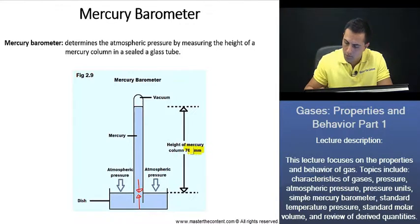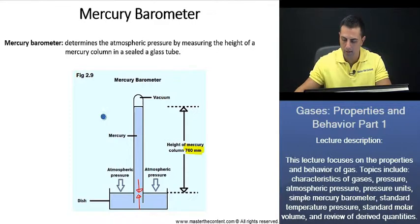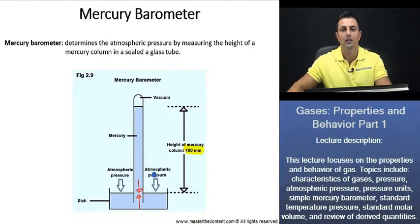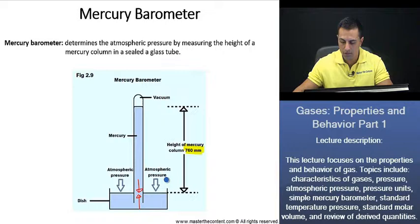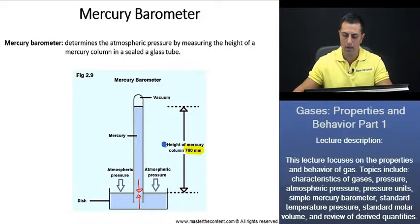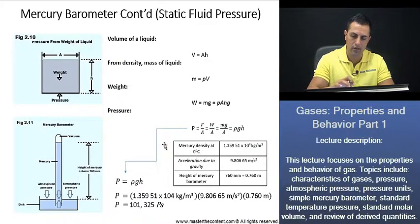Now, one other important point that we should note before we move on to our next slide is that with varying weather conditions and varying altitudes, atmospheric pressure is going to change. And as that atmospheric pressure changes, so will the height of the mercury column. Great. Let's continue now on to our next slide.